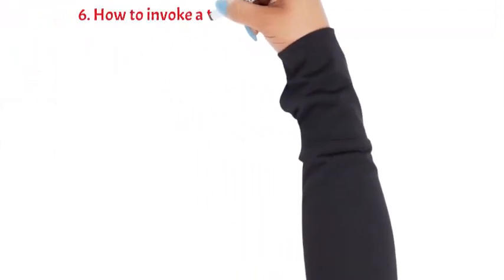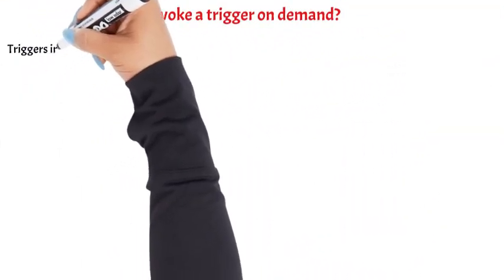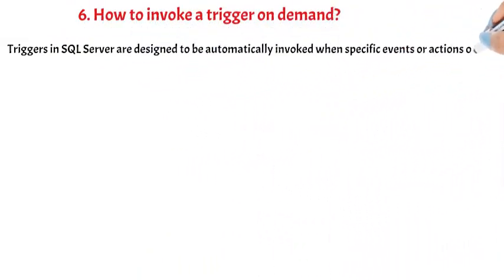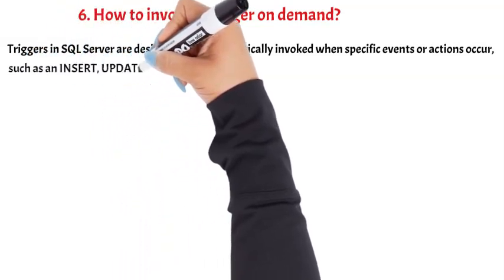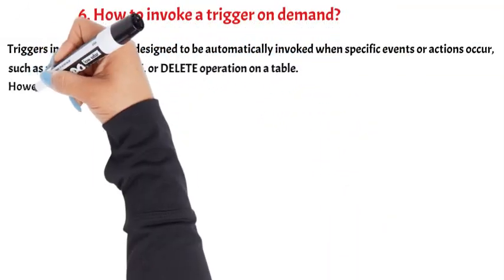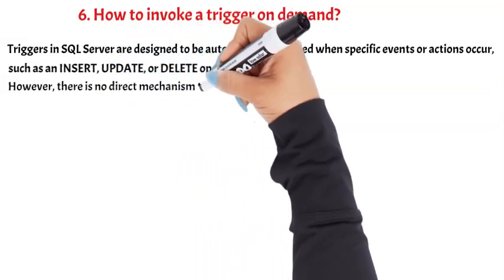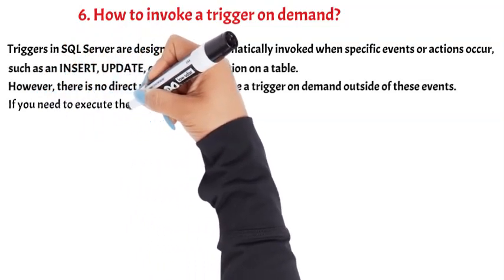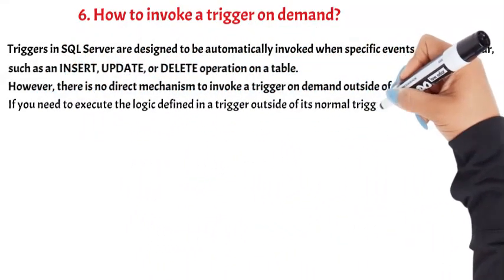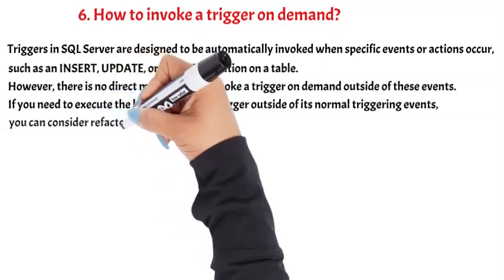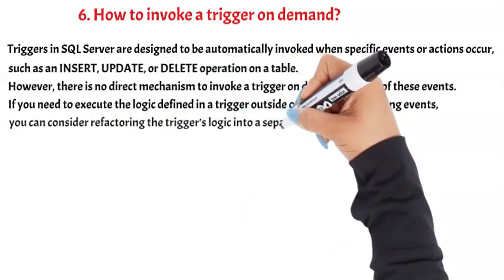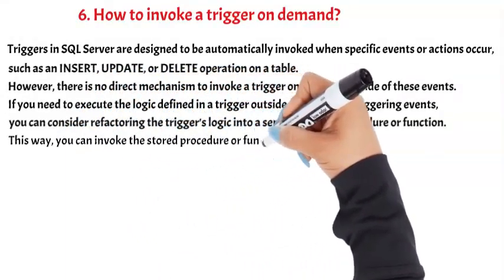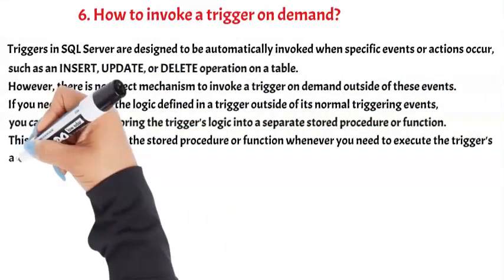Question 6: How do you invoke a trigger on demand? Triggers in SQL Server are designed to be automatically invoked when specific events or actions occur, such as an INSERT, UPDATE, or DELETE operation on a table. However, there is no direct mechanism to invoke a trigger on demand outside of these events. If you need to execute the logic defined in a trigger outside of its normal triggering events, you can consider refactoring the trigger's logic into a separate stored procedure or function. This way, you can invoke the stored procedure or function whenever you need to execute the trigger's actions.